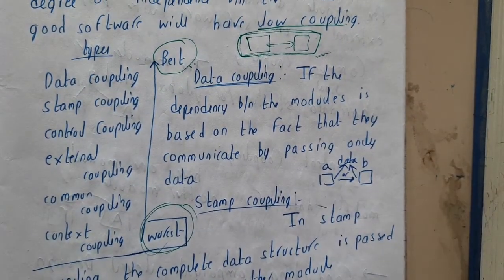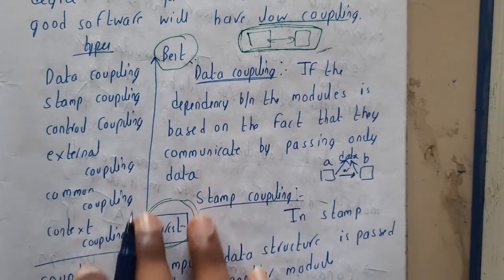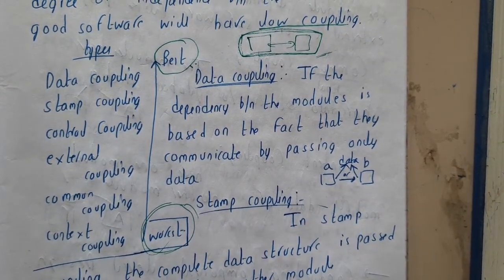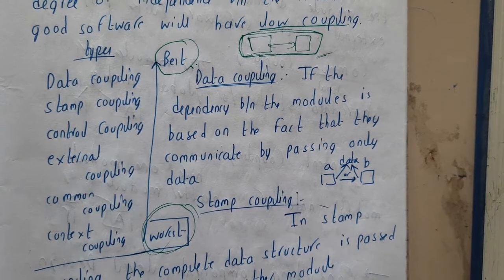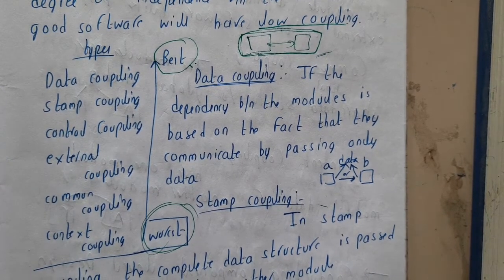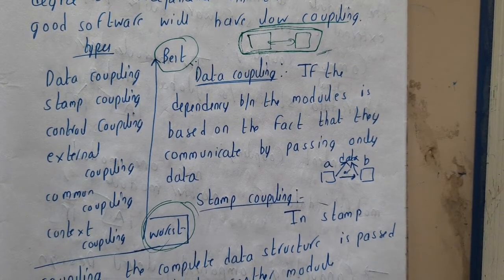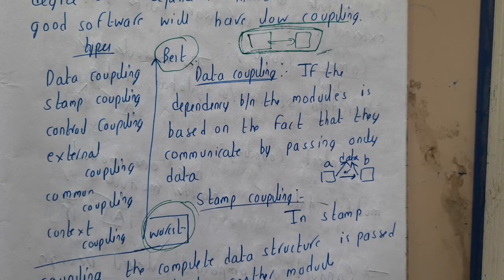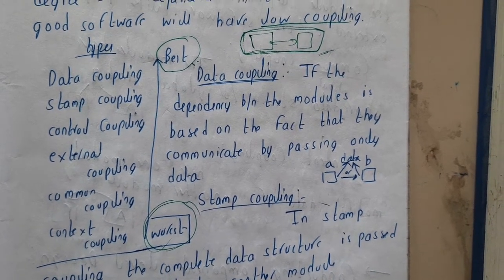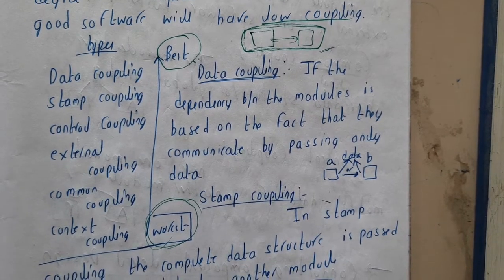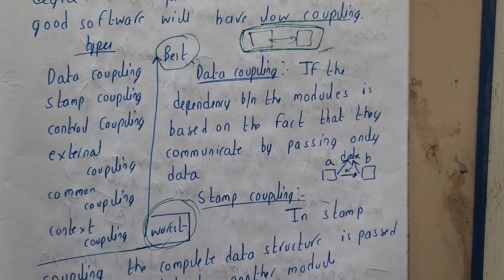Let us go through one after the other in the same order which we have written here. Data coupling: If dependency between the modules is based on the fact that they communicate by passing only data, they only pass the data between them. There is no major interaction between them.